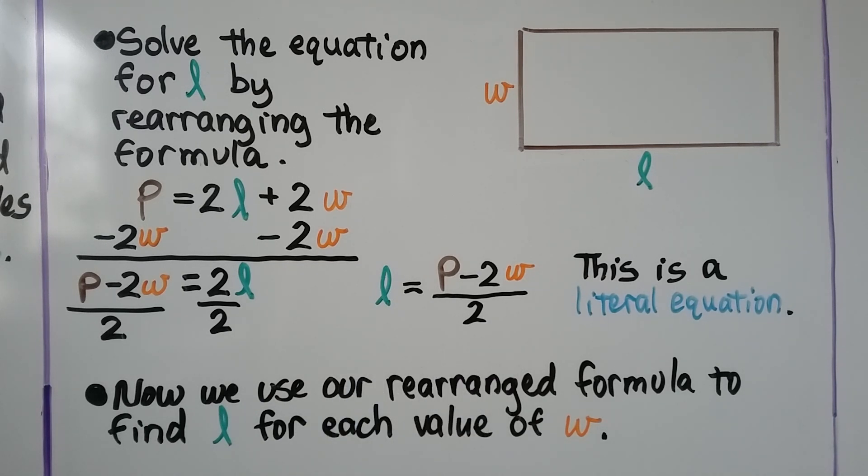This is a literal equation. Now we use our rearranged formula to find l for each value of w, that 4, 5, 6, and 10.